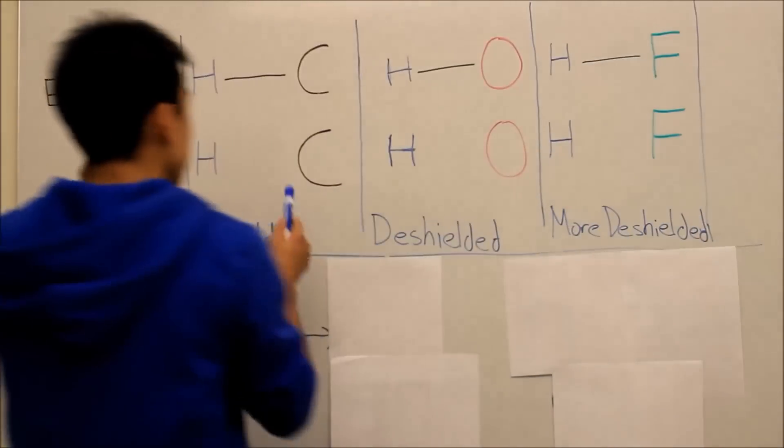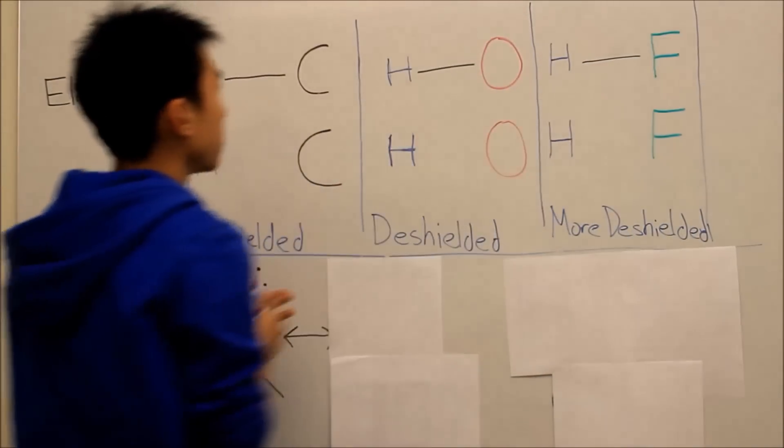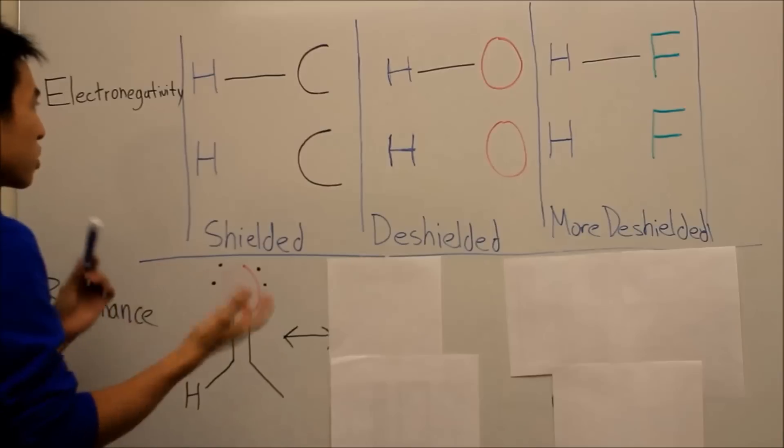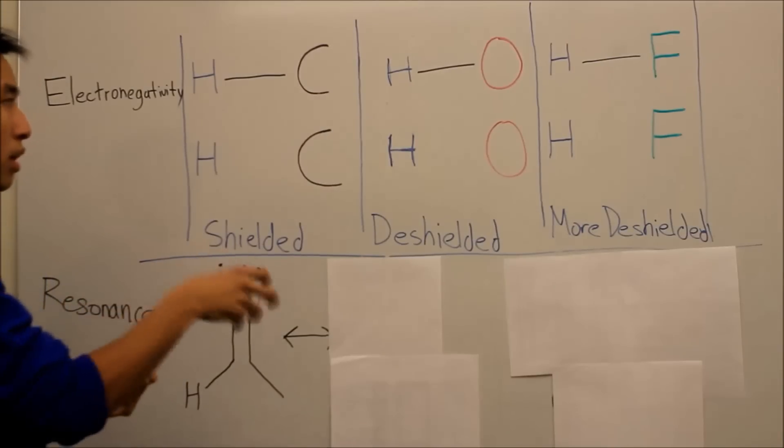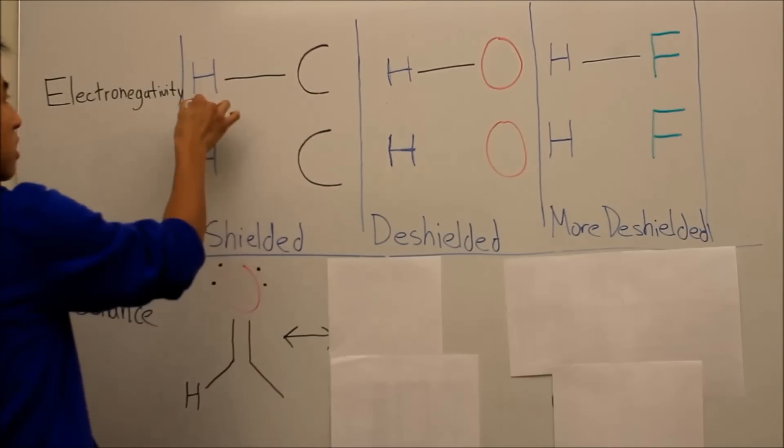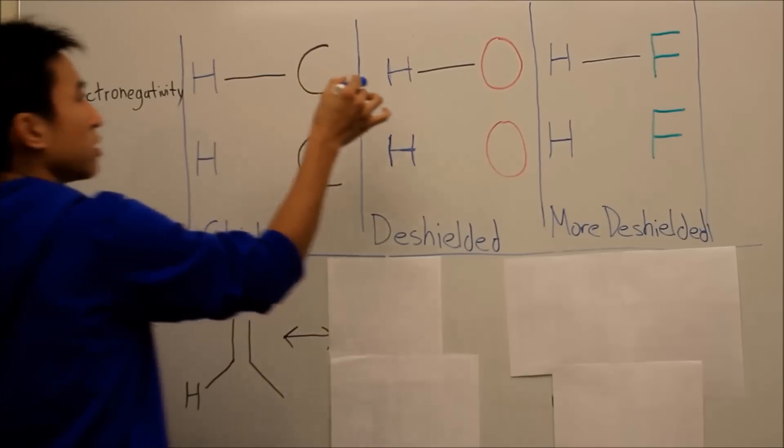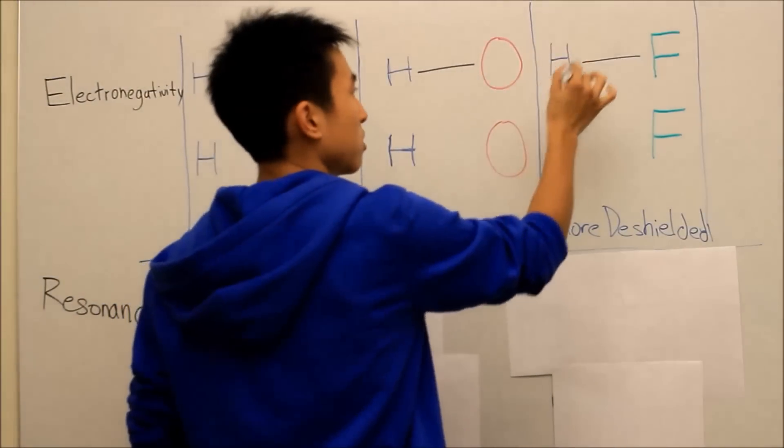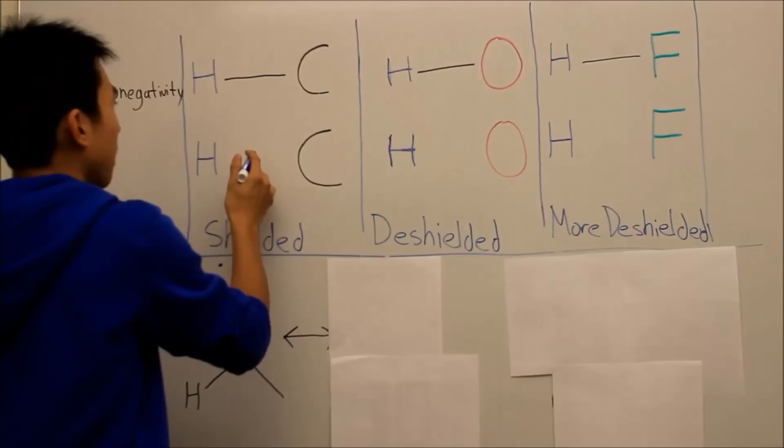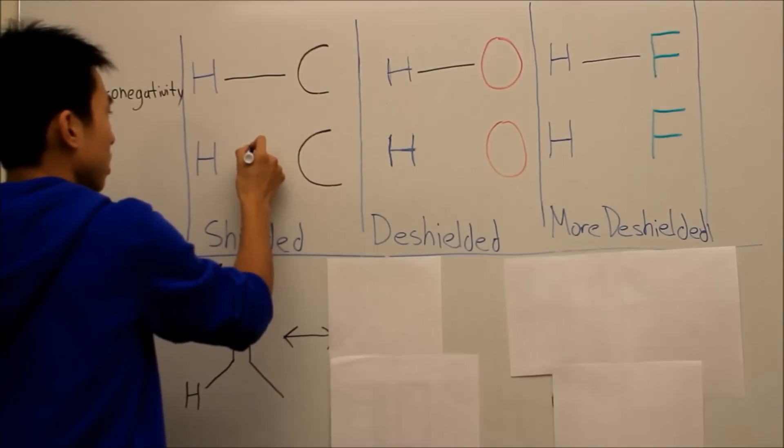So different atoms like carbon, oxygen, fluorine, they have different electronegativities. And what electronegativity is is basically the pulling of electrons. So you usually see the hydrogen carbon bond like this, hydrogen oxygen bond like this, hydrogen fluorine bond like this. But what we don't know is that they have different poles, so the electrons are at different locations.